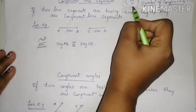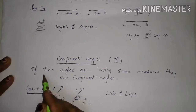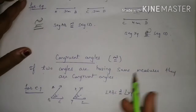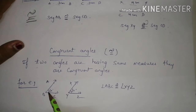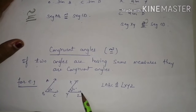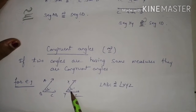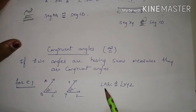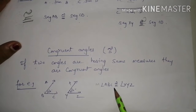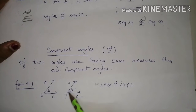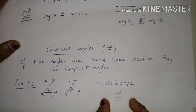Similarly, we can write congruent angles. If two angles have the same measure, they are congruent angles. For example, angle ABC has a measure of 30 degrees and angle XYZ also has a measure of 30 degrees. Since their measures are the same, the two angles are congruent. We write: measure of angle ABC is congruent to measure of angle XYZ.